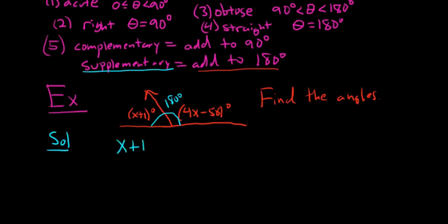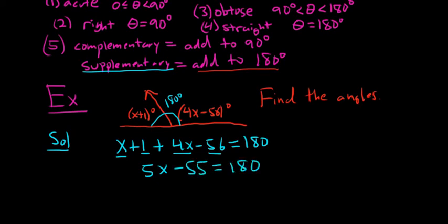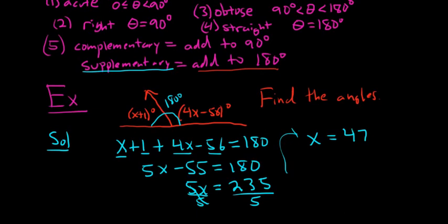So x plus 1. And I'll be a little bit terse. I'll drop the degree symbol. Plus 4x minus 56 is equal to 180. Then you just combine the x's. So 5x and then 1 and minus 56 is minus 55 is equal to 180. Now we can add 55 to both sides. So we get 5x equals 180 plus 55. That's going to be 235. And then to finish we divide by 5. So we end up with x equals 47 degrees.